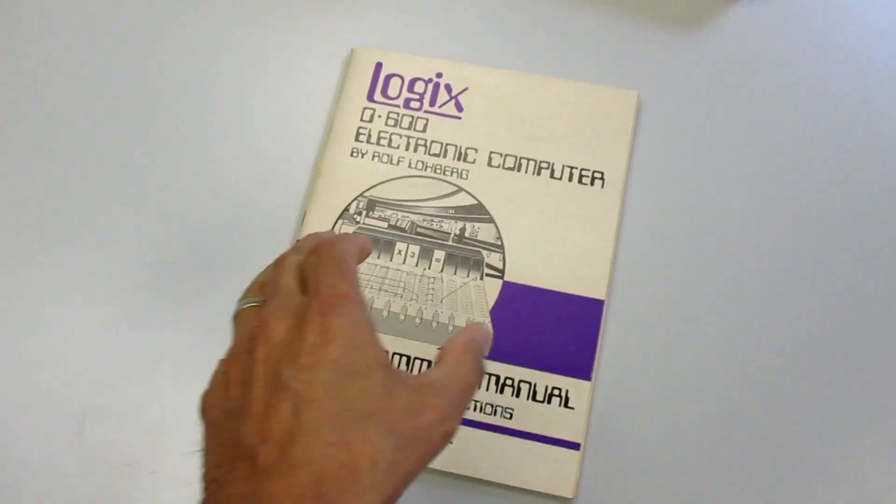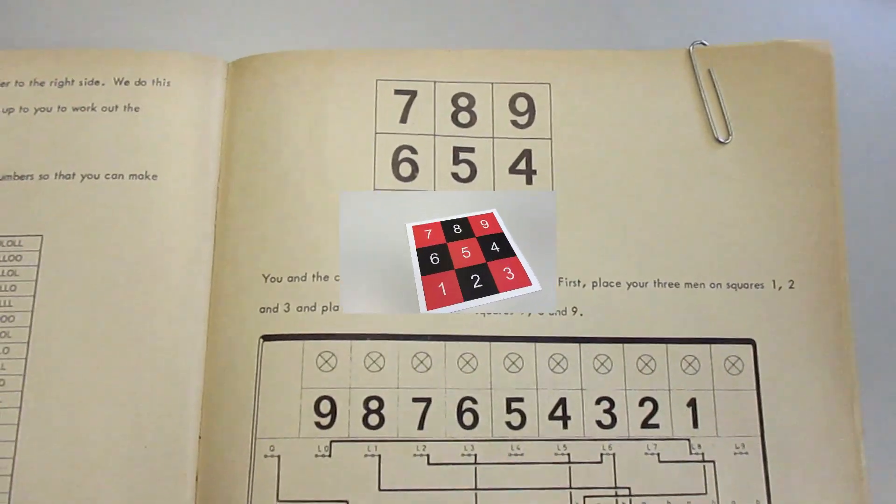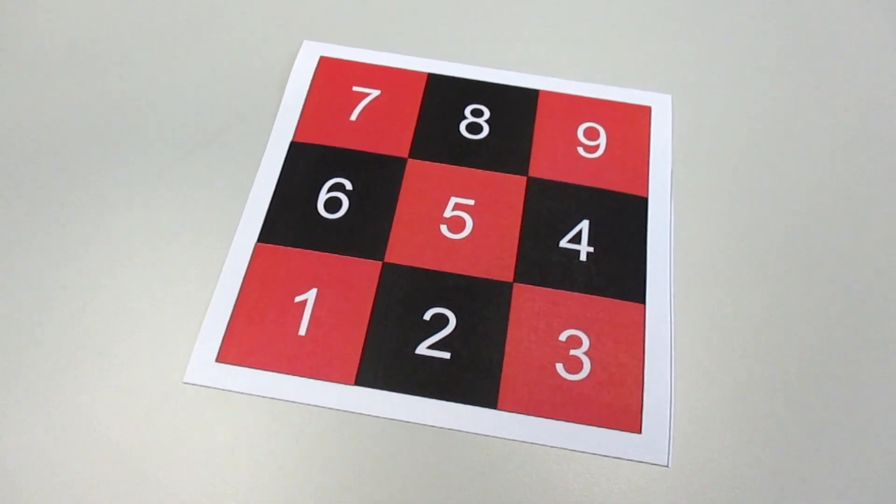We here demonstrate how the Logix computer performs on a simplified checkers game. The game is found in the documentation for the 0600 and played on a 3 by 3 grid.